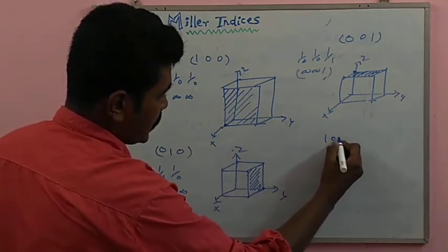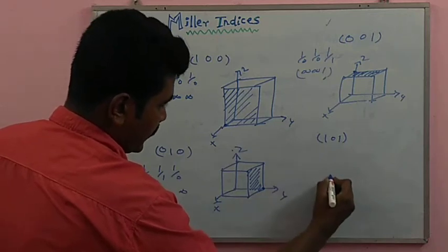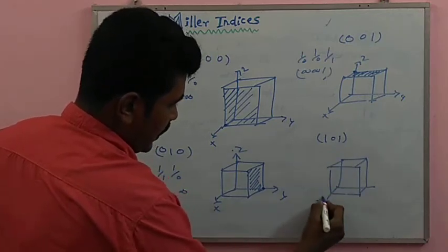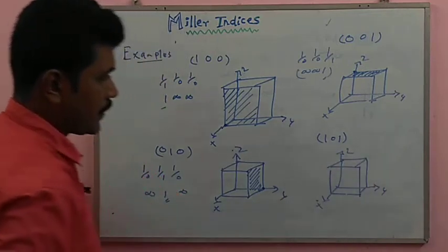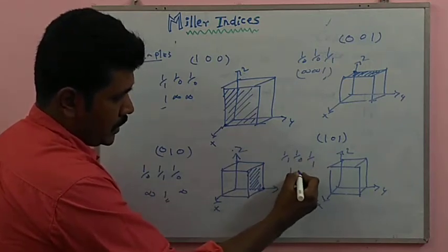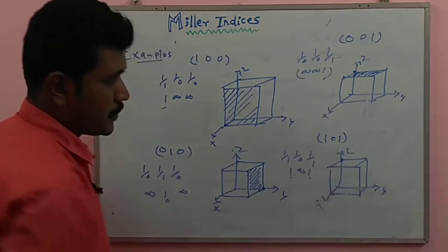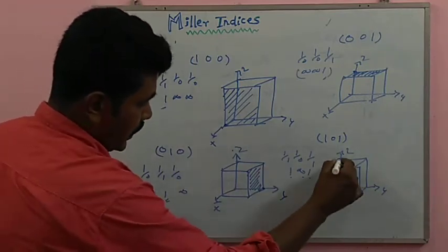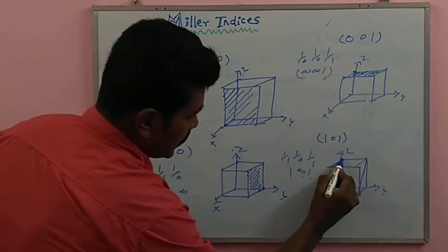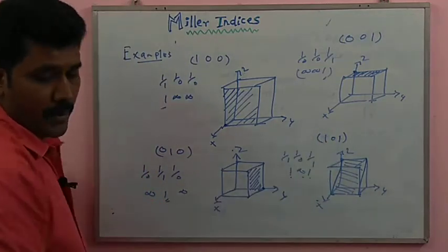Next: the (1 0 1) plane. The reciprocals are 1/1, 1/0, 1/1, giving values 1, infinity, and 1. So x and z are each one unit, while y is infinity. Join these two points — they are parallel — and shade the particular portion for the (1 0 1) plane.